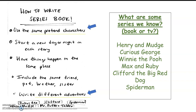You might know some series and not even know they are series books or series TV. We know Henry and Mudge is a series book. Curious George is also a series book because Curious George is the same character in each book, but he goes on different adventures — he goes to the firehouse, plays with his friends, goes to the zoo, goes to the aquarium, but it's always about Curious George. Other books or TV shows include Winnie the Pooh, Max and Ruby, Clifford the Big Red Dog, and Spider-Man.